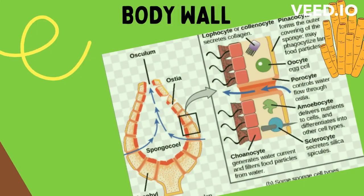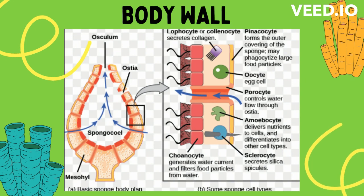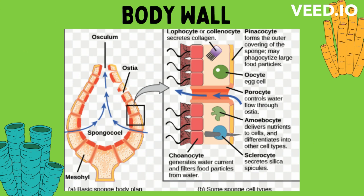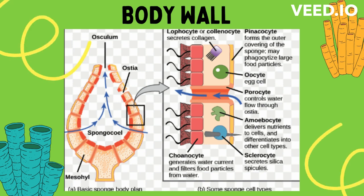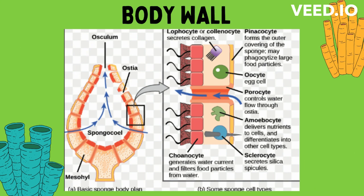Moving to their body wall: sponges are diploblastic animals, developed from two germ layers. The body wall of an adult sponge is also formed of two layers — the outer dermal layer or pinacoderm, composed of flat pinacocytes, and the inner gastral layer or choanoderm, composed of flagellated collar cells or choanocytes, whose flagella beat continuously.